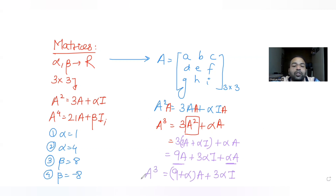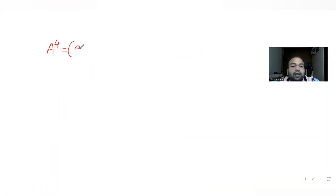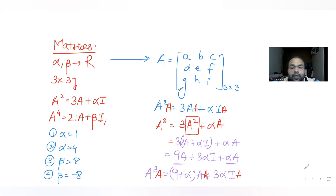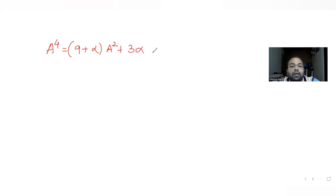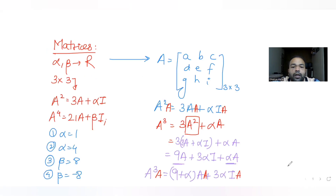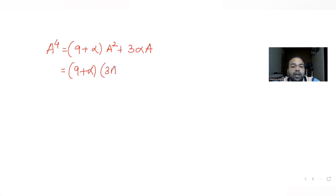Now to get A⁴, I'll again multiply both sides by A. A³ × A becomes A⁴. This becomes (9 + α)A² + 3αA. Now if I again substitute A² = 3A + αI instead of A², I write 3A + αI.